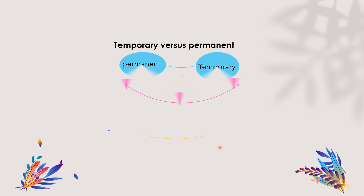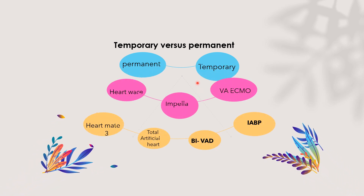Regarding temporary versus permanent assisted devices: a temporary assisted device is like a rescue therapy — for recovery, heart transplant, or bridging to a permanent device, such as VA ECMO or Impella. The intra-aortic balloon pump can be used for recovery or as a bridge to another temporary assisted device. Permanent devices will be destination therapy, like an LVAD, hardware, or artificial heart — or a bridge to transplant if the patient is young.